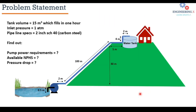Let's move to the problem statement. We have to deliver water from a water lake up to a hill water tank to supply water to residents living at a hill station. The tank volume is 15 cubic meters and should be filled in one hour. The inlet pressure is atmospheric, all pipeline has a two-inch standard diameter with schedule 40, and the material is carbon steel. We need to find the pump power requirements, the available net positive suction head, and the pressure drop through this route.